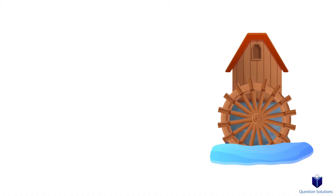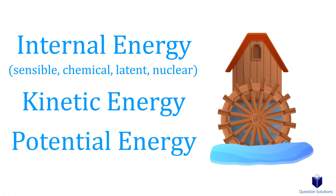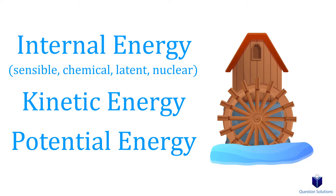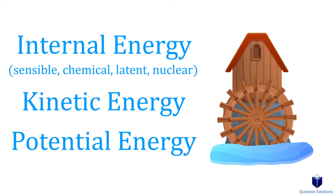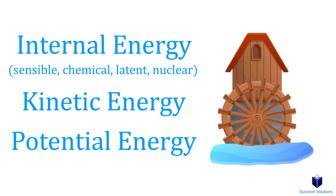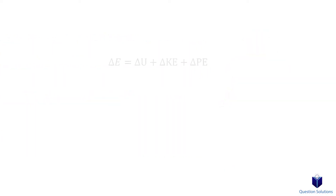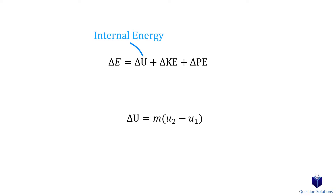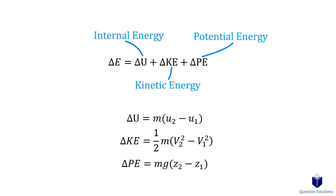Keep in mind that energy exists in numerous forms like internal energy, kinetic energy, potential energy, and more. We can represent the total energy of a system, excluding electric and magnetic energy, using the letter E, and we can show the change in total energy of a system like this. Here, U represents internal energy, KE represents kinetic energy, and PE represents potential energy.